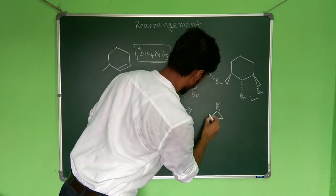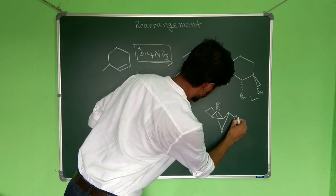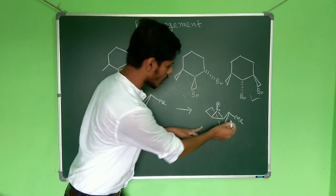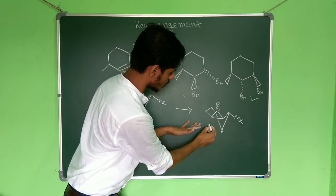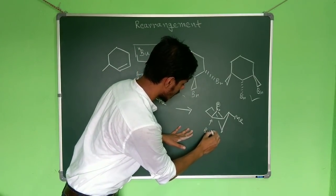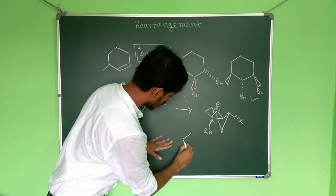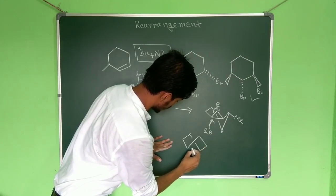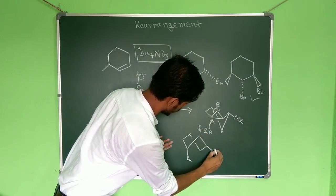Now here is where the next mistake occurs. You can open this bromonium ion from two positions. You might think: the methyl group is here, so bromine will come away from the methyl and attack from the other carbon. Let us see what happens in that case.